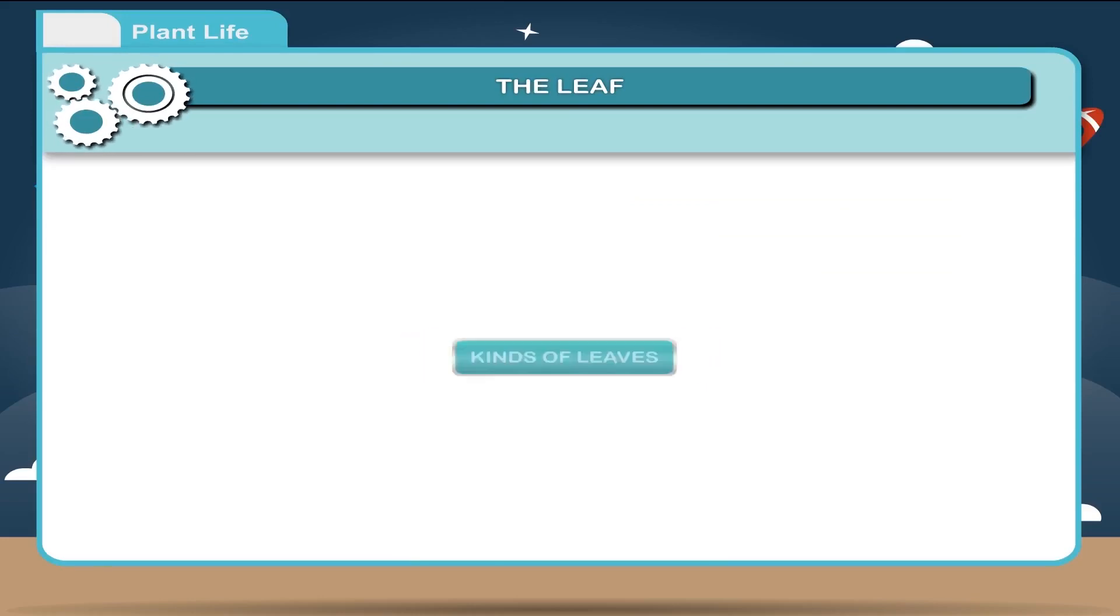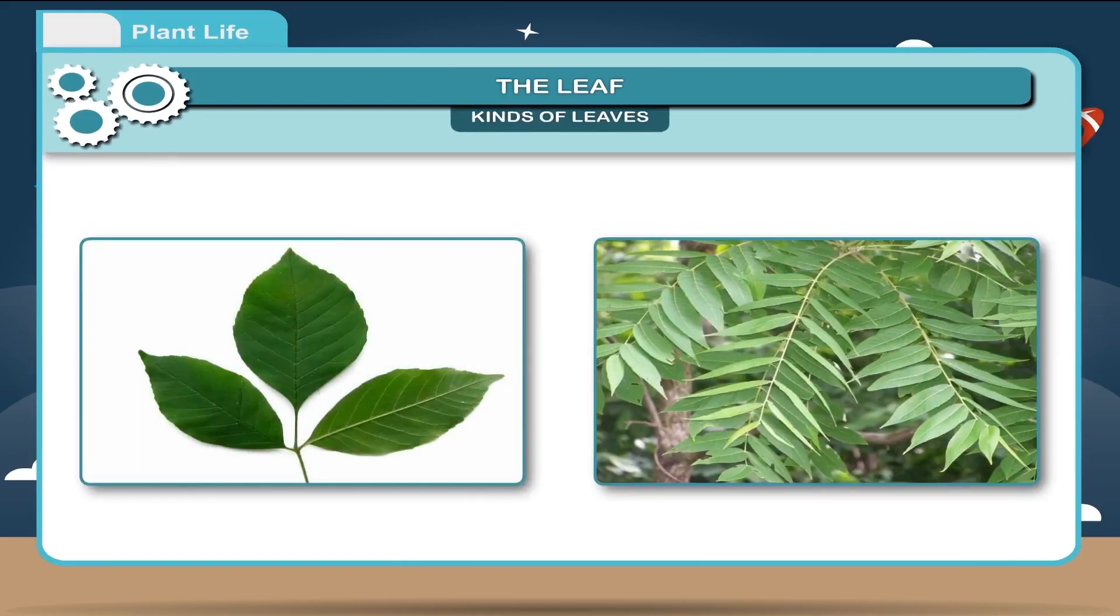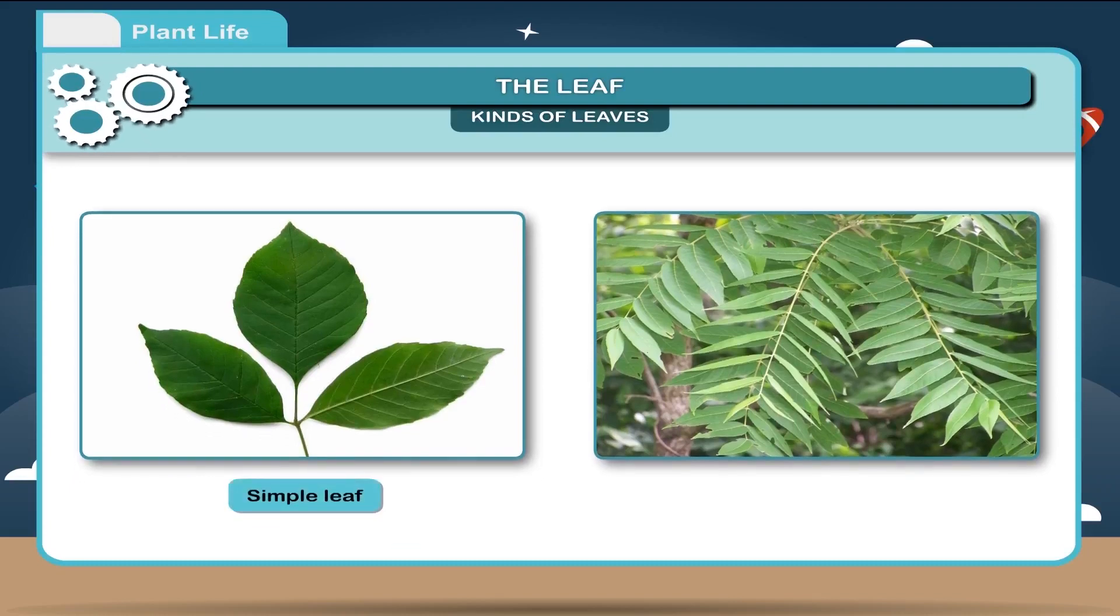Kinds of Leaves: On the basis of lamina, leaves are of two kinds: simple leaf and compound leaf.